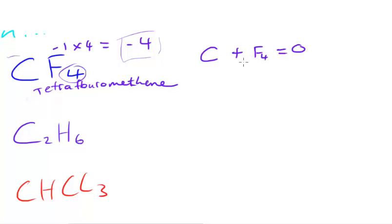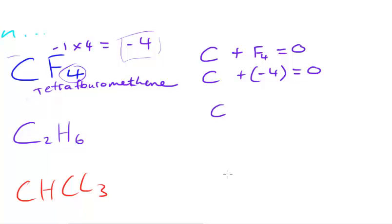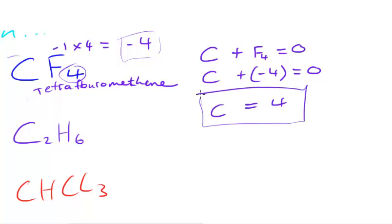We've calculated that the total fluorine contribution is minus 4, so: carbon + (−4) = 0. This is just like an algebraic equation. Adding 4 to both sides, the minus 4 becomes 0 and the 0 becomes 4. So carbon equals 4 — the oxidation number of carbon in CF4 is +4.